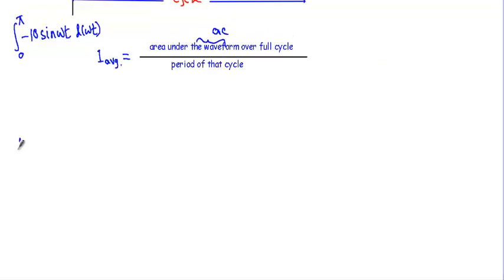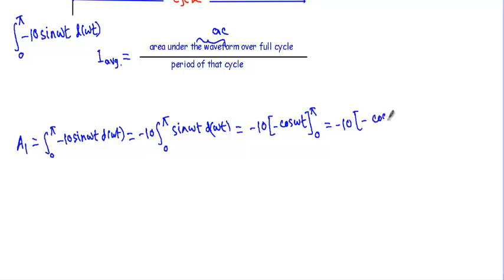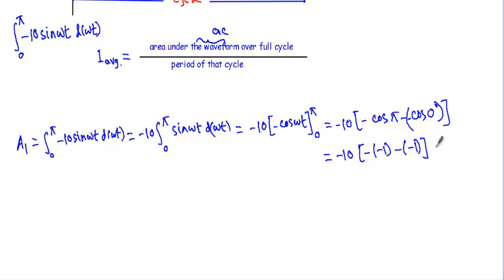Therefore, area A1 equals the integration from 0 to π of −10 sin(ωt) d(ωt). This 10 will be outside the integration sign, giving −10 times [−cos(ωt)] evaluated from 0 to π. Putting in the limits: −10 × (−cos π − (−cos 0°)) = −10 × (−(−1) − (−1) ) = −10 × (1 + 1) = −10 × 2. So the area A1 covered by the half sine wave equals −20.